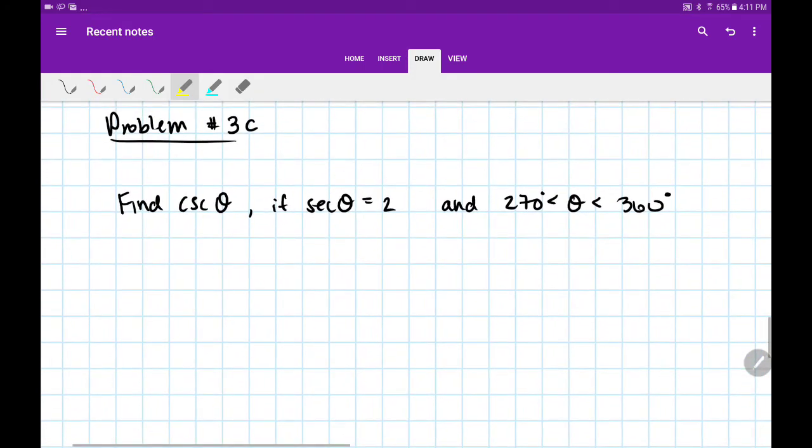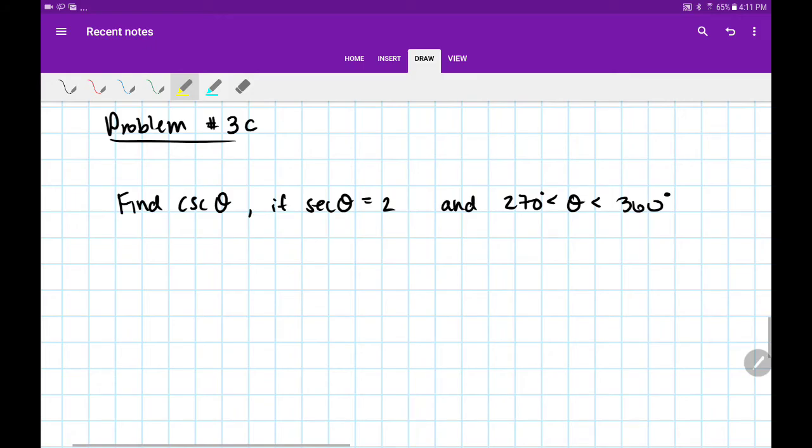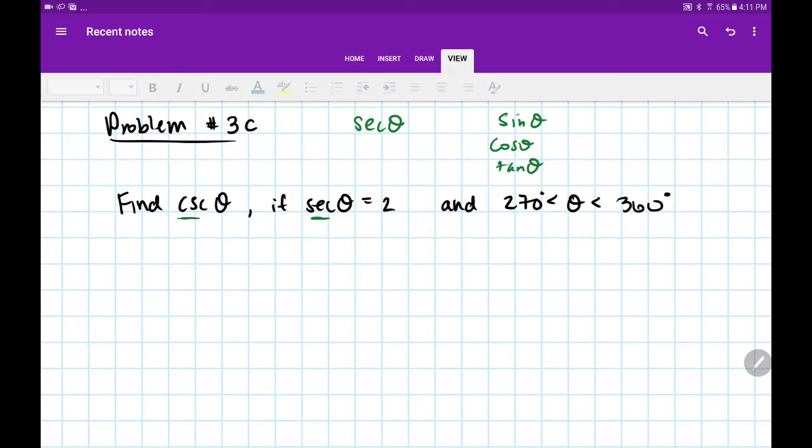We'll do one more problem, which is very similar. This one will use our reciprocal trig functions. Notice we're dealing now with cosecant and secant. If our first step is to label, then we need to remember: secant θ is the reciprocal of which function? Sine, cosine, or tangent.